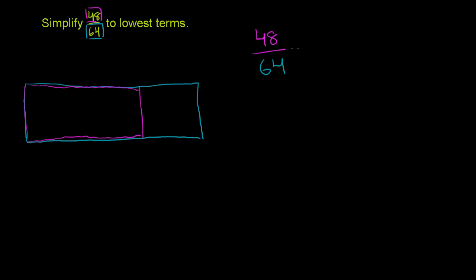So you could say that 48 is equal to, well, what is it? It's 3 times 16. And 64 is 4 times 16, over 4 times 16. Now, this is interesting.